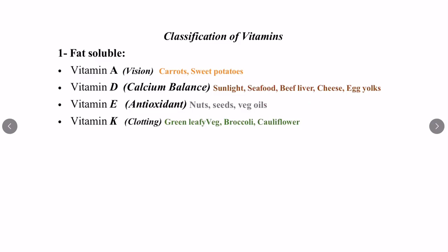On the basis of their solubility, vitamins can be classified into two groups: fat-soluble vitamins and water-soluble vitamins. Fat-soluble vitamins are soluble in fat — they can easily dissolve in fat, which can be easily stored in our body, meaning they can accumulate and be saved for later use. The four fat-soluble vitamins are vitamin A, vitamin D, vitamin E, and vitamin K.